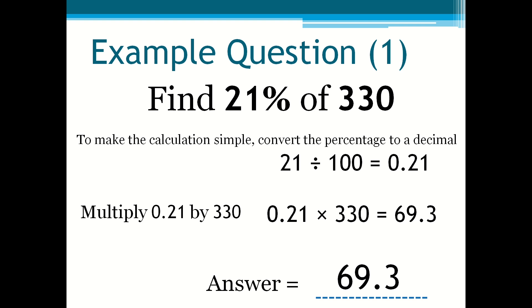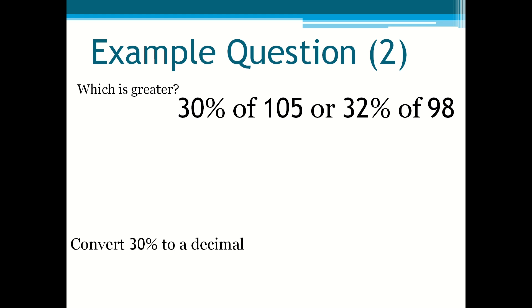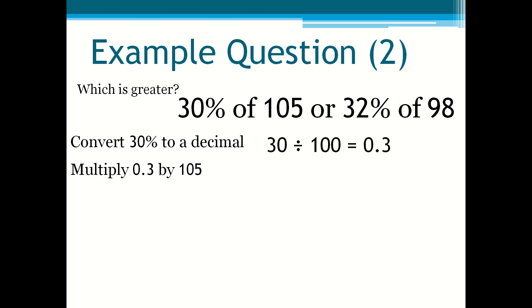Example question 2: Which is greater, 30% of 105 or 32% of 98? First, you convert 30% to a decimal, which is 0.3. Then you multiply 0.3 by 105 and that is 31.5.